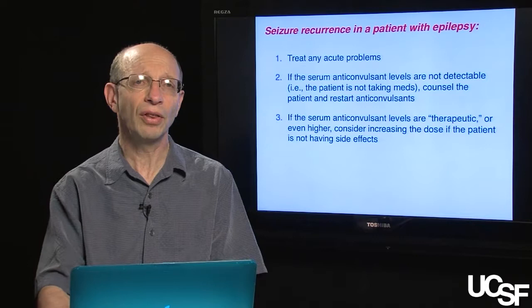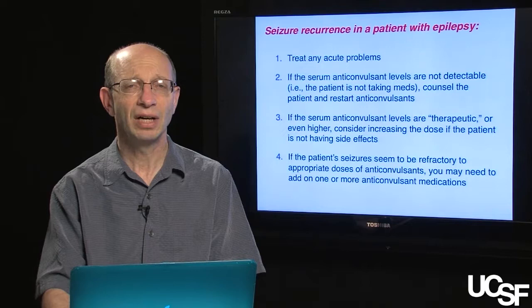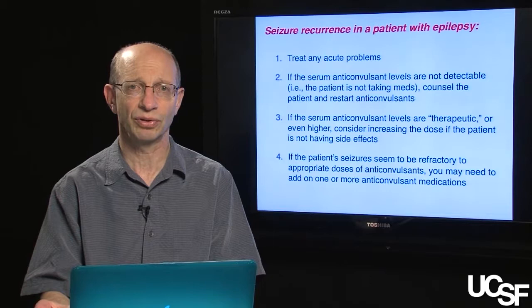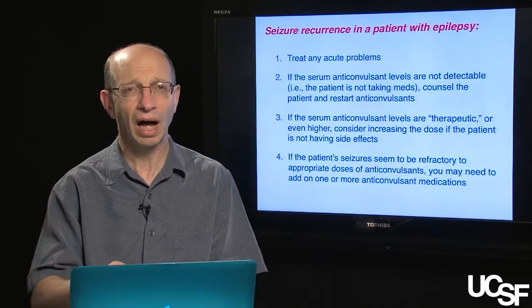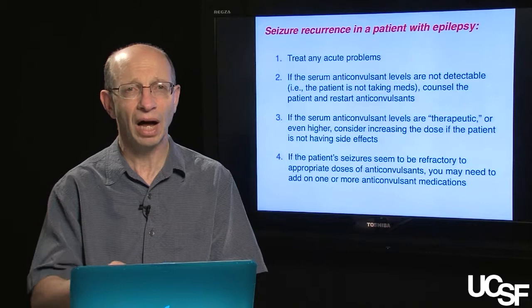One other consideration when a patient has a seizure recurrence while already being treated: if the seizures appear refractory to an appropriate dose of anticonvulsants and you've done all the things discussed, we need to add one or more anticonvulsant medications. A detailed discussion of exactly how to do this is beyond this module, though we'll likely get into it in class.